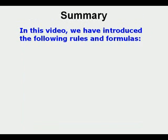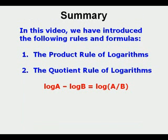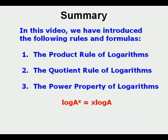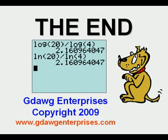In this video we have introduced the following rules and formulas. The product rule of logarithms: log a plus log b equals the log of a times b. The quotient rule of logarithms: log a minus log b equals the log of a divided by b. The power property of logarithms: log of a to the power of x equals x times the log of a. We've also introduced the change of base formula. We hope this summary of these special properties of logarithms has been helpful.